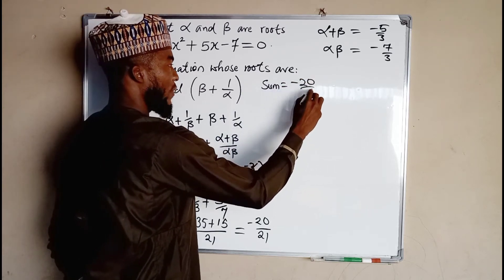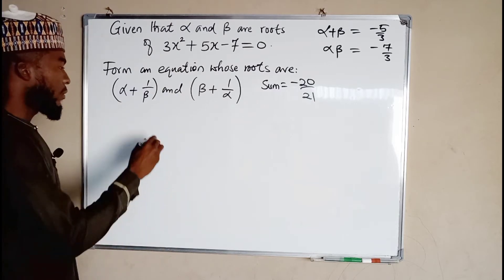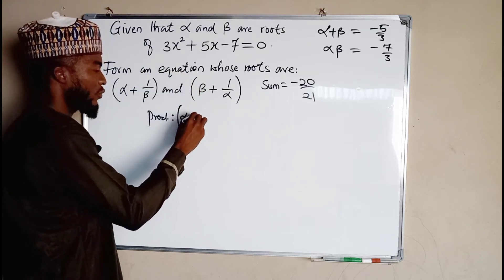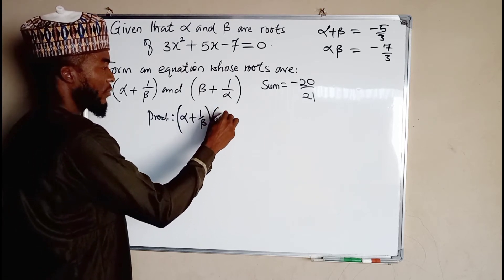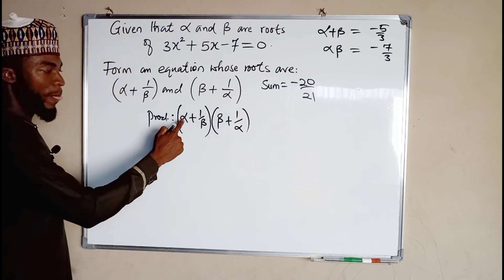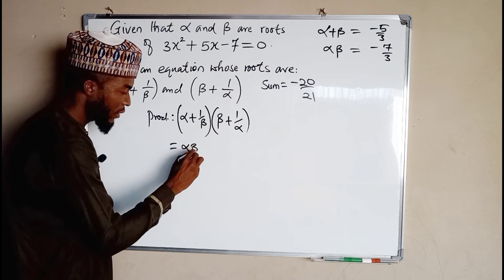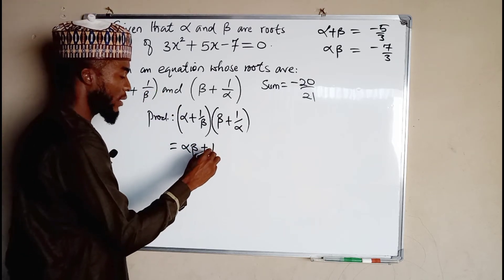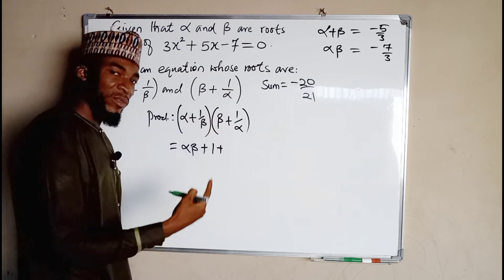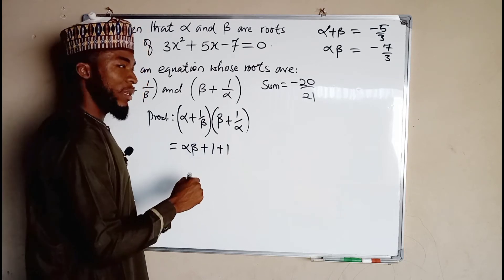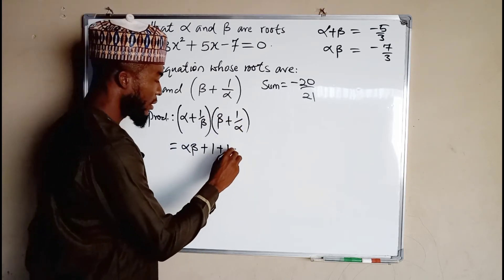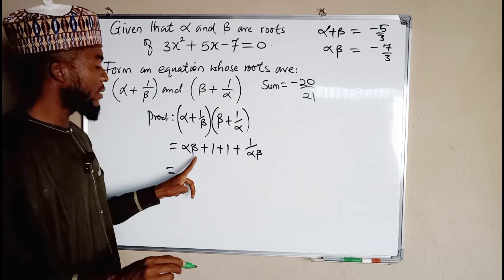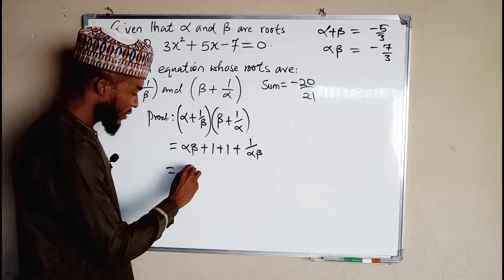The sum of these two roots is negative 20 over 21. Now let us find the product — it means we should multiply the two roots together: (alpha + 1/beta) multiplied by (beta + 1/alpha). Expanding: alpha times beta, plus alpha times 1/alpha which is 1, plus 1/beta times beta which is also 1, plus 1/beta times 1/alpha which is 1 over alpha beta. This equals alpha times beta, which is negative 7 over 3.